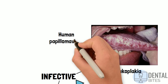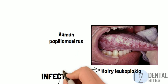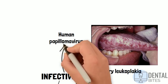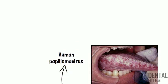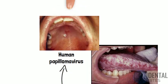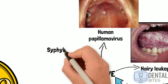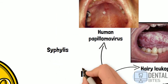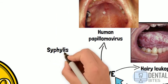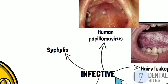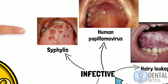Human papillomavirus infections can also cause warts and papillomas. A syphilitic patch can also be a cause for an infective white lesion, and this condition is caused by the Treponema pallidum bacteria.